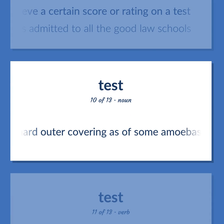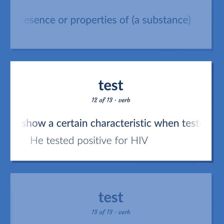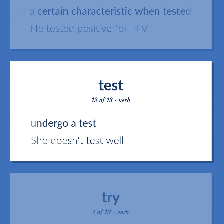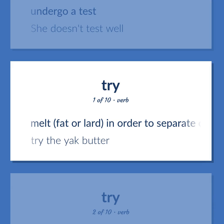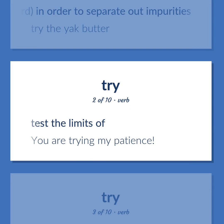She tested high on the LSAT and was admitted to all the good law schools. A hard outer covering as of some amoebas and sea urchins. Determine the presence or properties of a substance. Show a certain characteristic when tested. He tested positive for HIV. Undergo a test. She doesn't test well. Melt fat or lard in order to separate out impurities. Try the yak butter. Test the limits of. You are trying my patience.